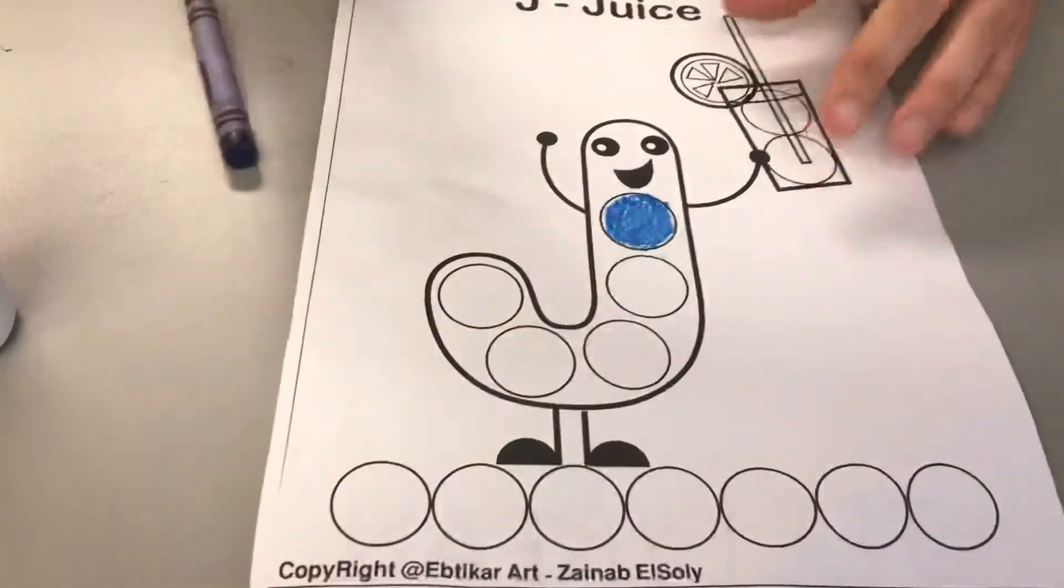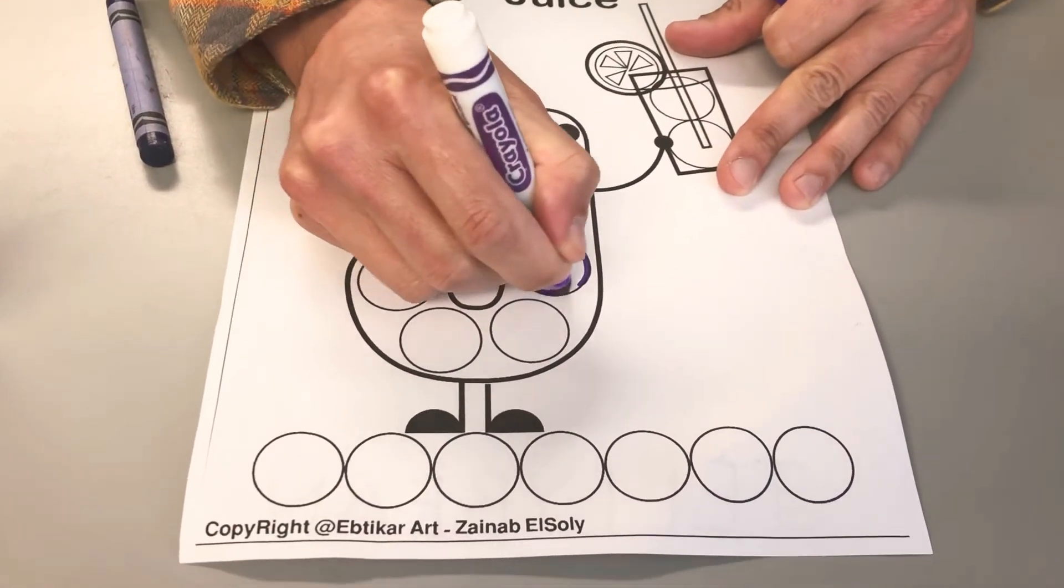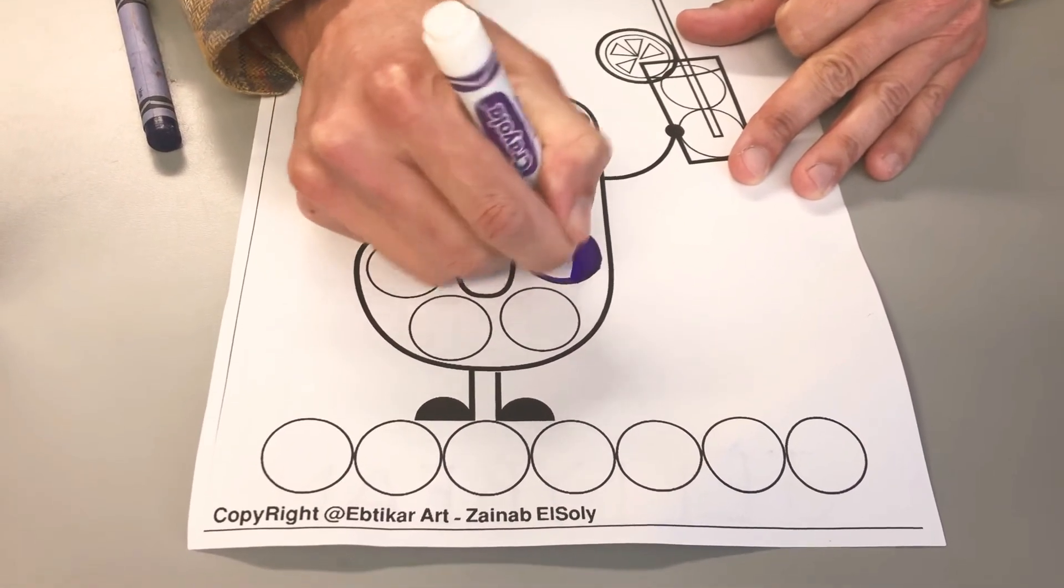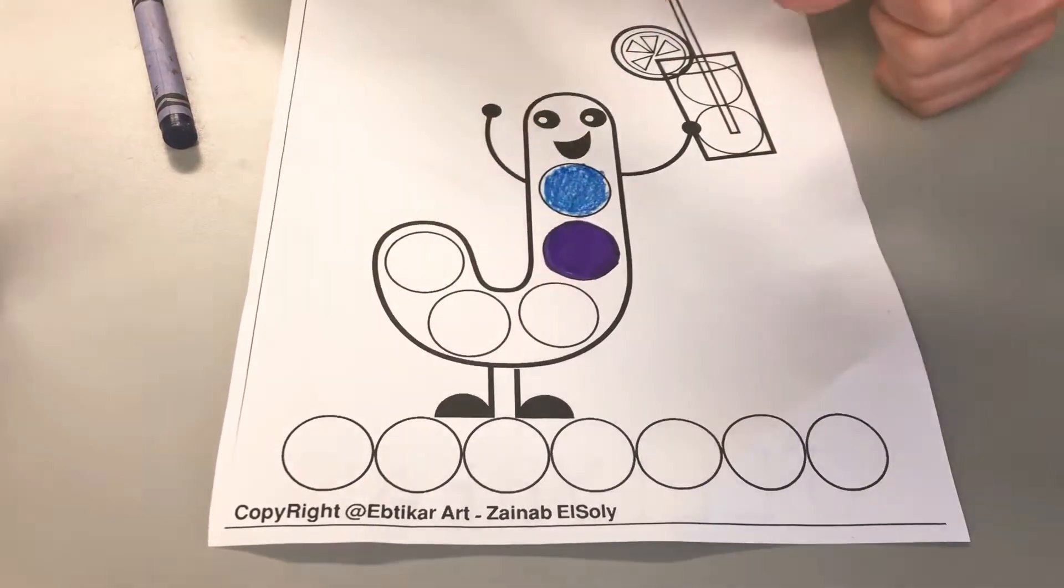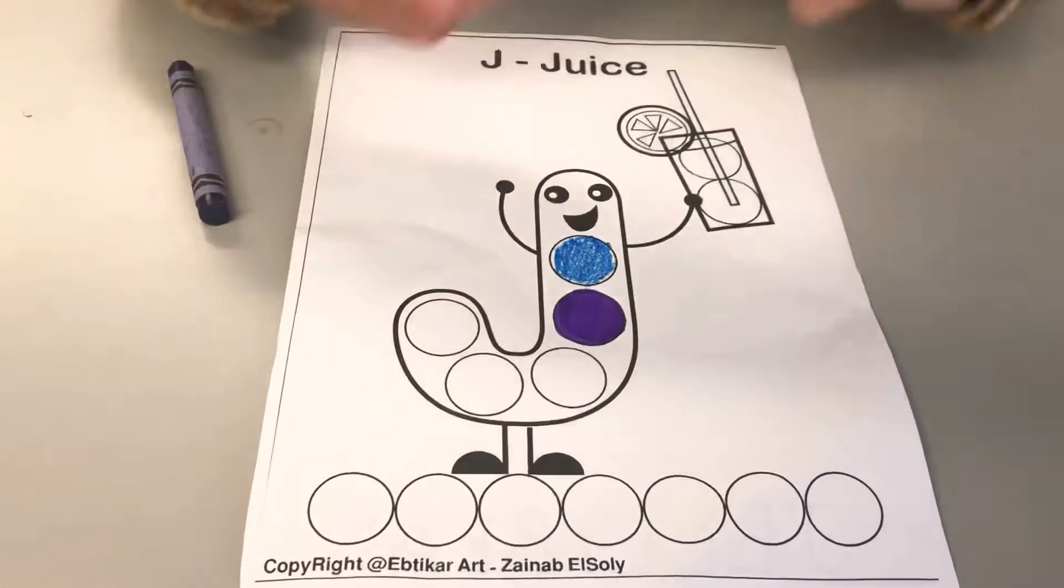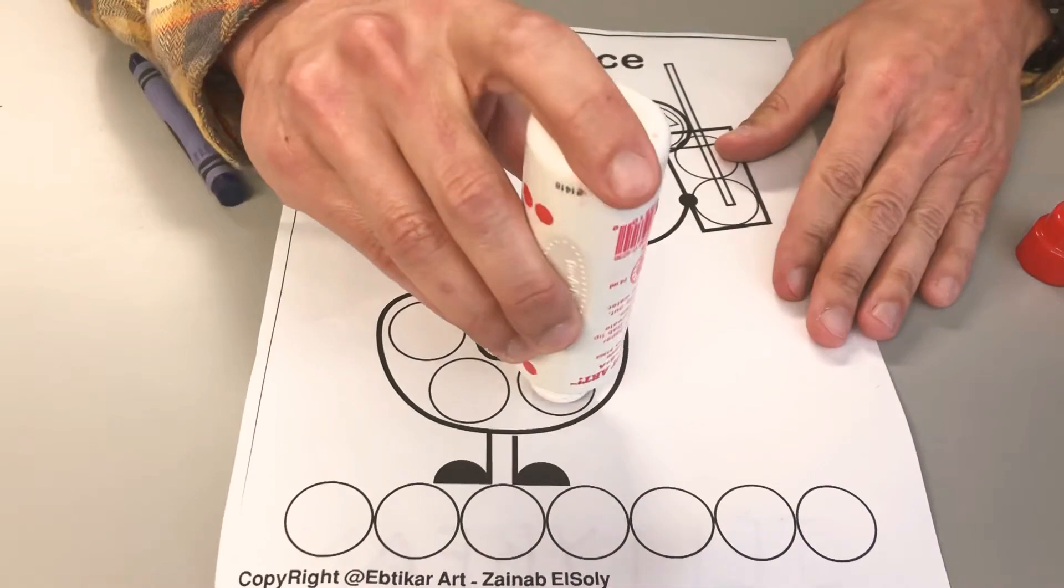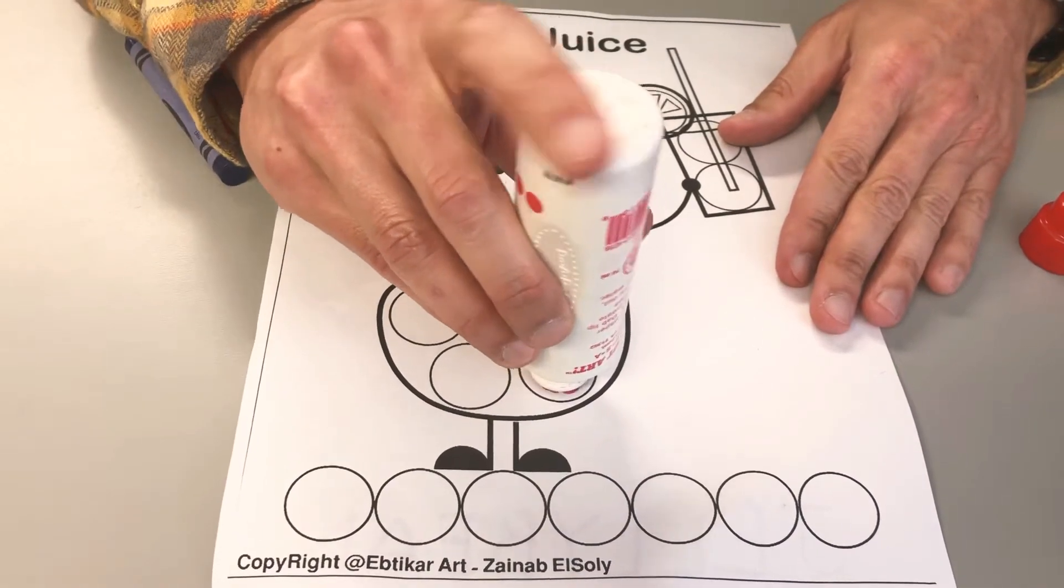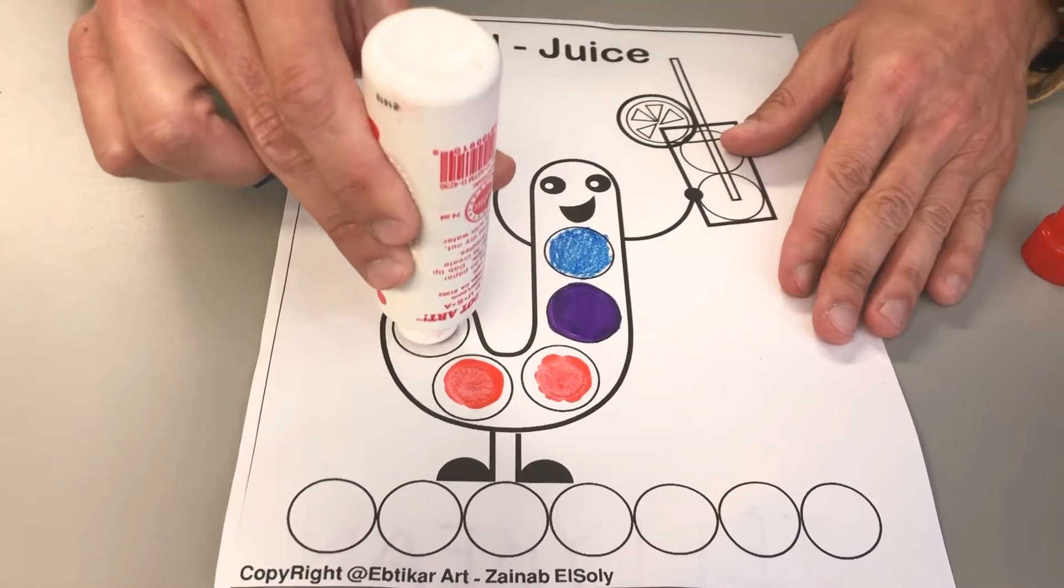If you have a marker you could do the same thing, you could maybe even just circle it like that, and then fill it in. Okay, so I'm going to use the dot paint for the rest. So when we do dot paint at school we push down, we don't push down too hard, and then we do it again. This is great fine motor activity.